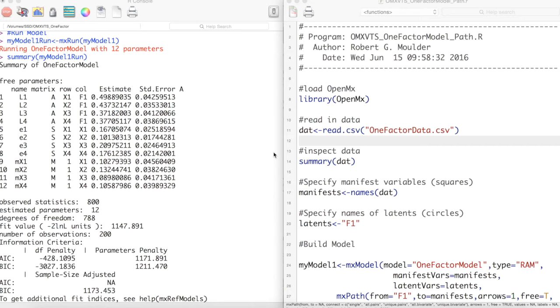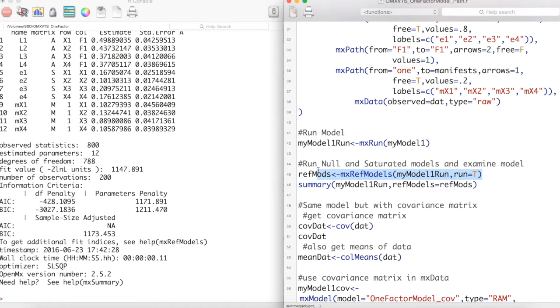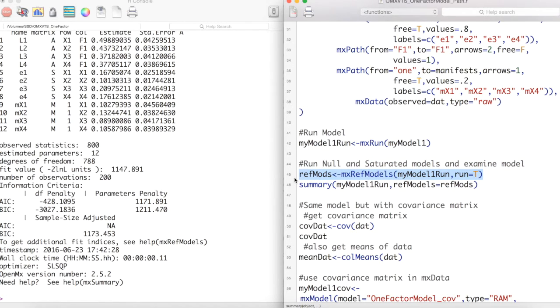We could either model these by hand, which could take some time for large models. Or we could use this function, mxRefModels. This function takes in a model and creates the appropriate reference models. We can then get a summary of this model, with the refModels argument being the reference models we just created.